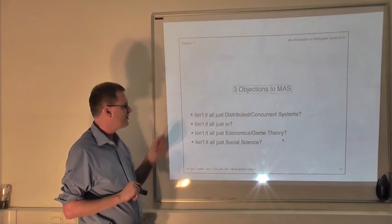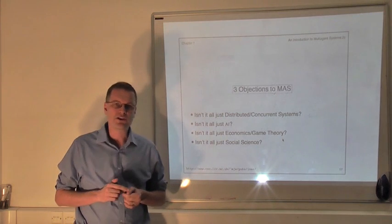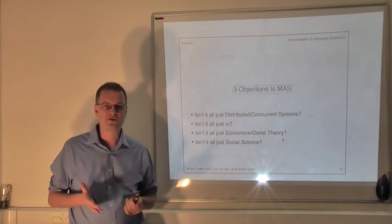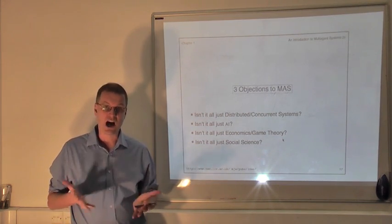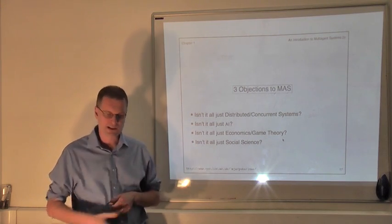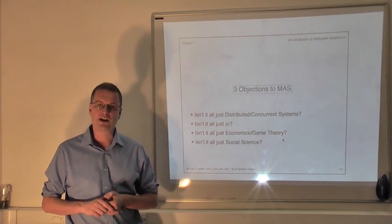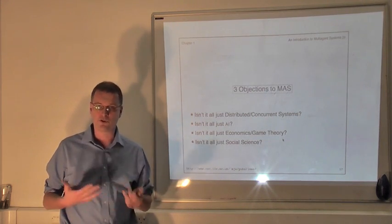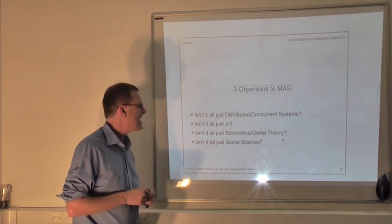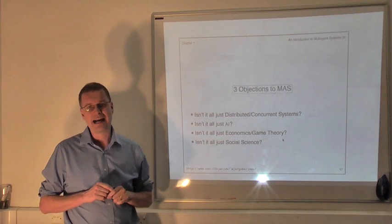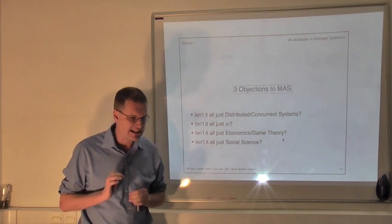So the first question that you get is: isn't what you're doing when you talk about multi-agent systems just a distributed system? Well, multi-agent systems by their nature are distributed or concurrent systems. You have a bunch of processing nodes and they communicate by exchanging messages over some kind of communication infrastructure or data network. But viewing a multi-agent system as a distributed system is really missing the point completely.